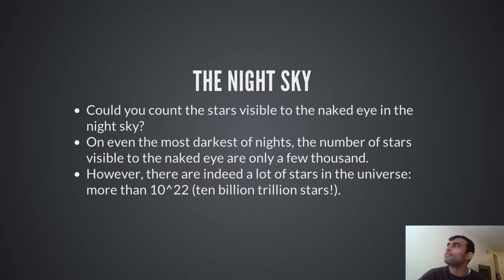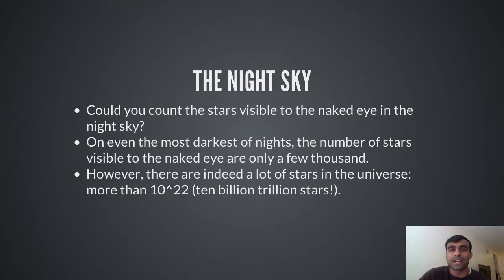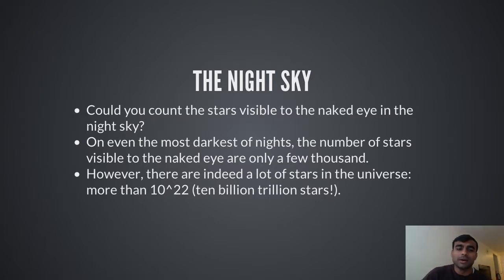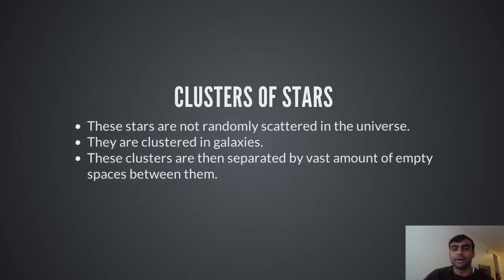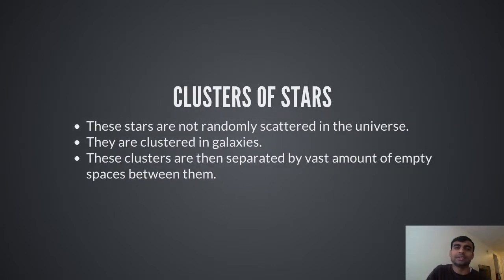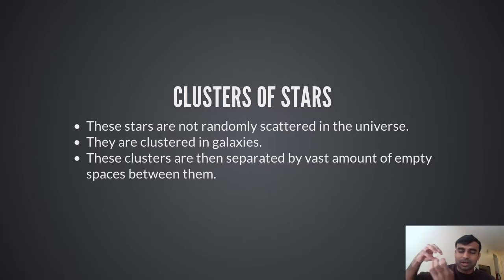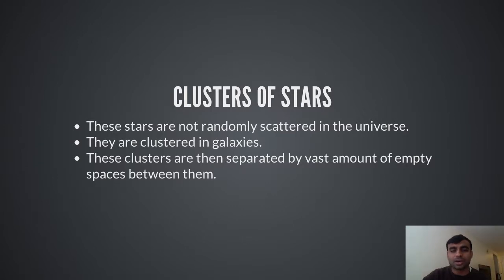So let's start with the night sky. When we look at the night sky we see so many stars. We are often told as children that there are infinite stars, but that is not true. The number of stars visible on the darkest nights is about 2 to 3,000. The number of stars in the universe is about 10 to the power 22, which is 10 billion trillion stars. These stars are not scattered randomly — they are clustered in groups with huge space between them, and these clusters are known as galaxies.